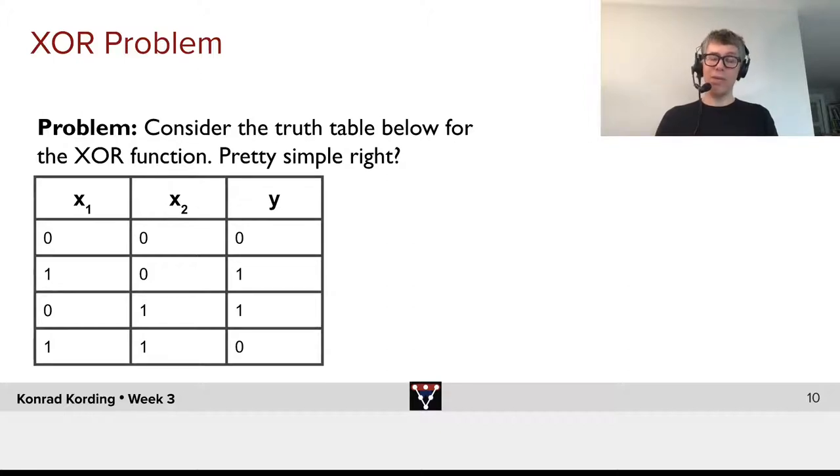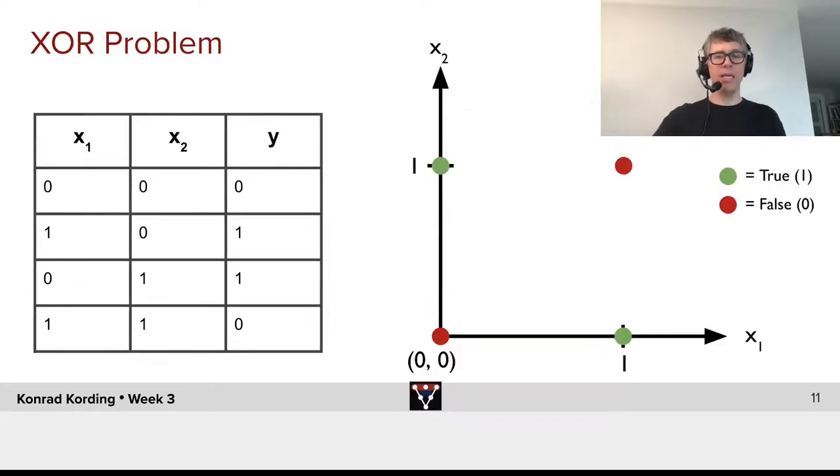If at least one of them is 1, if exactly one of them is 1, the output should be 1. It's an easy function, and it should be easy to learn that.